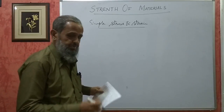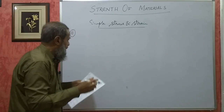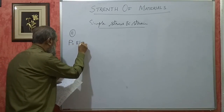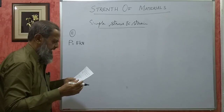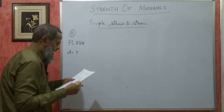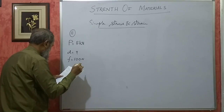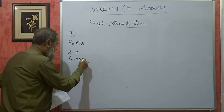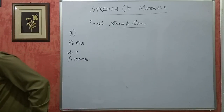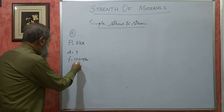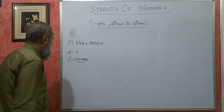I have taken the 11th problem. It reads: a load of 5 kilo Newton is to be raised with the help of a steel wire. Find the diameter of the wire if the allowable stress in the material is not to exceed 100 MPa, which is 100 Newton per mm square. This load should be converted into Newton: 5000 Newton.